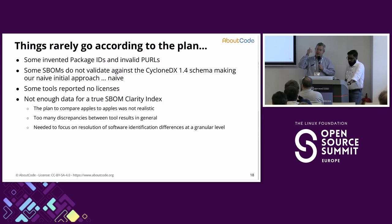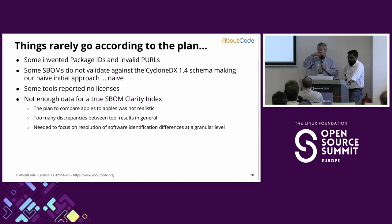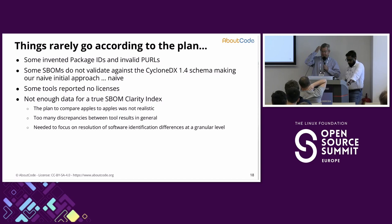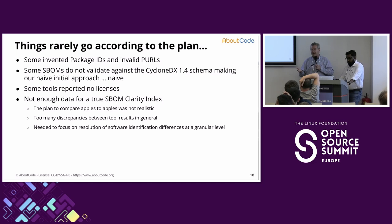Even with schema-valid SBOMs, there were issues with content structure — it's not always clear what to use, leading to different interpretations by different tool developers for the exact same spec. In some cases, tools reported absolutely no license information. The SBOM Clarity Index idea fell apart pretty quickly because it was not comparing apples to apples, or even apples to oranges — more like apples to cars.